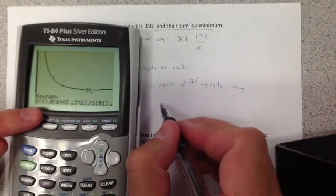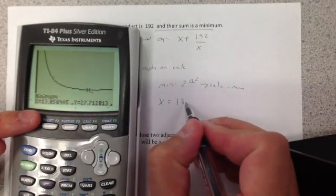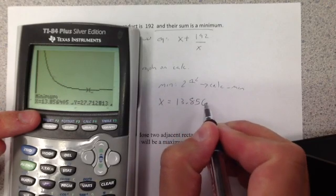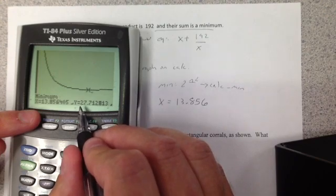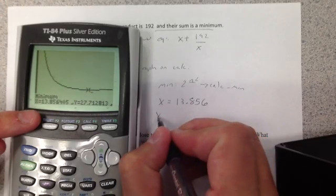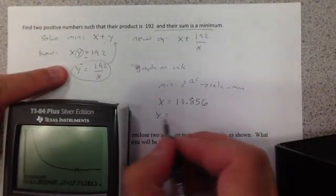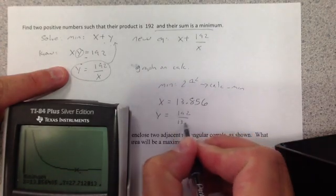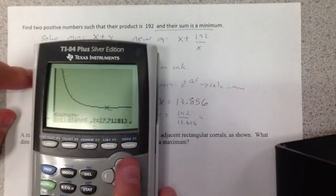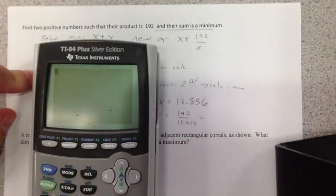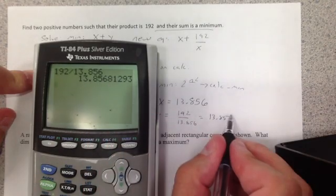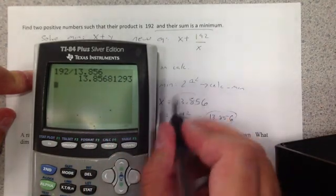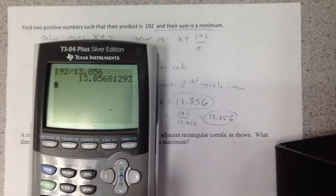I hit enter for guess. And look, there it is. It gives me an x value of 13.856. Be careful, that is not your actual y value for the equation. That's actually what the sum is going to be. To get my y value, I go back to here. Take my 192, divide it by the 13.856. I get 13.857, but it's really supposed to be a 6 because we're just rounding. So my two numbers are both 13.856, x and y. And there's our answer.